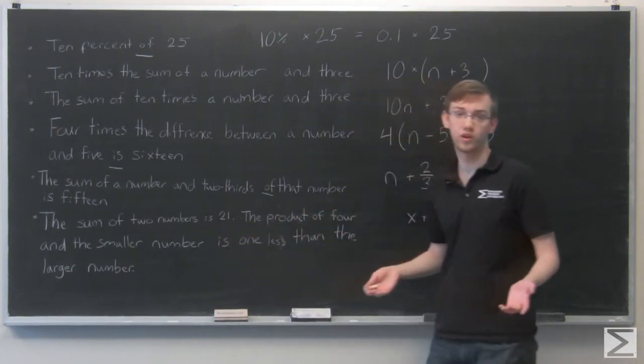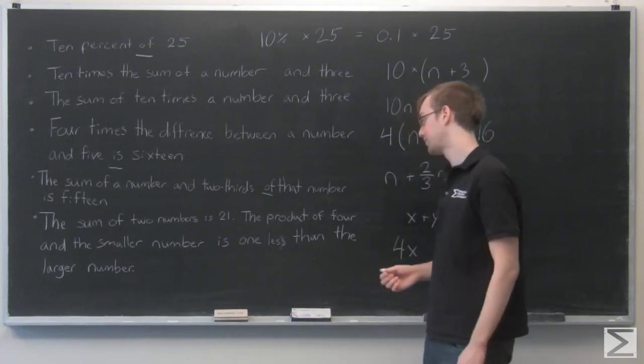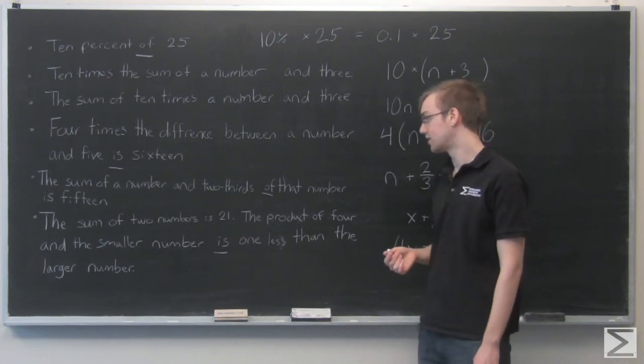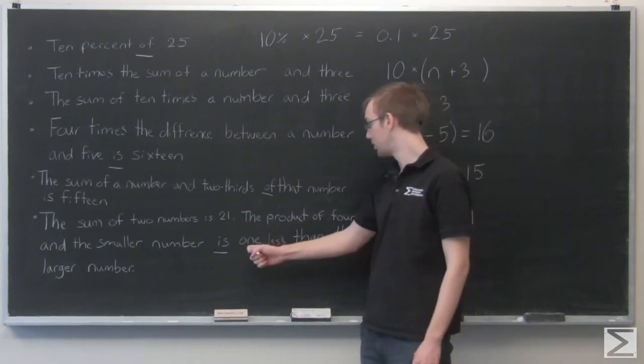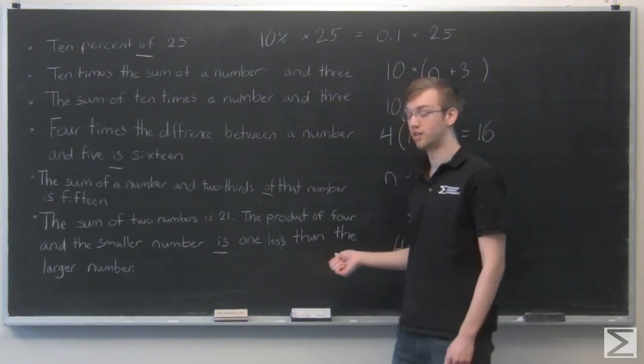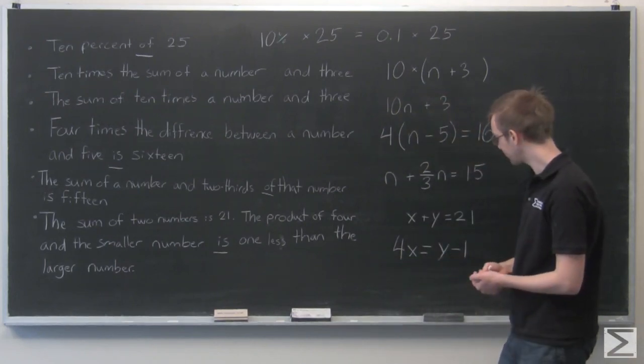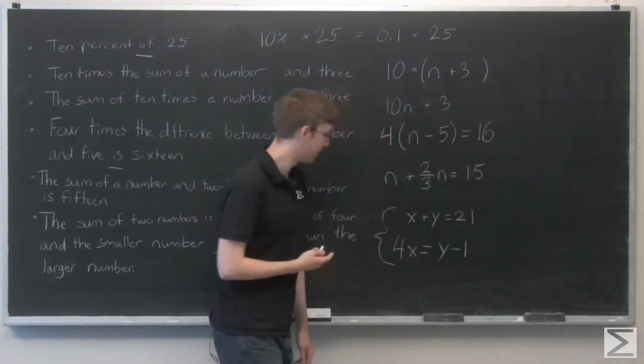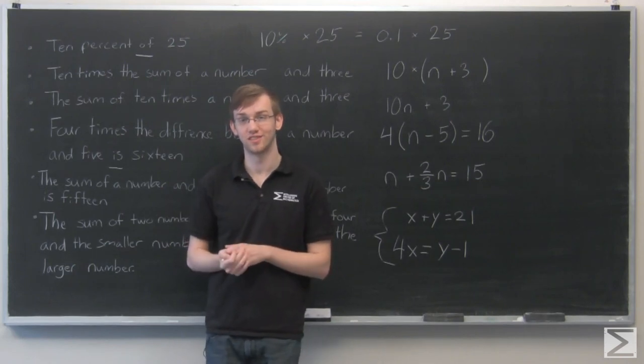The product of four and the smaller number—I'm going to arbitrarily say that x is the smaller number—so that's four times x. 'Is,' that's another keyword for equals. One less than the larger number: x is the smaller number, we're going to say y is the larger number. And one less than y is going to be y minus one. Remember, even though we have one appearing first in the sentence, 'one less than the larger number,' to translate that into symbols, we need to switch those quantities around, so it's y minus one. So this sentence is represented by that system of equations, and it should be fairly simple to solve.